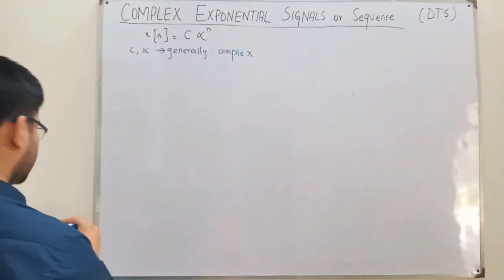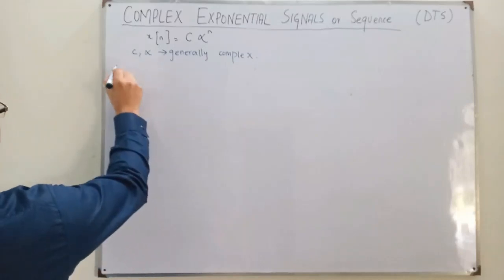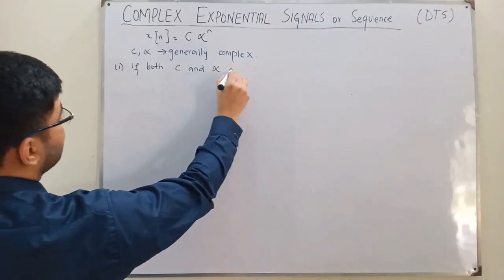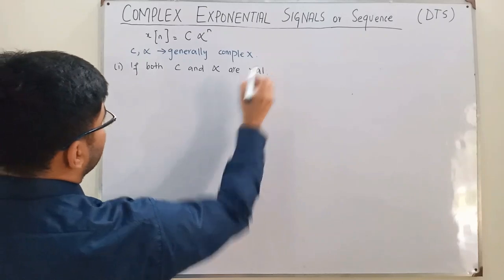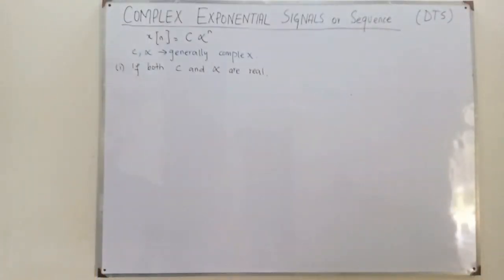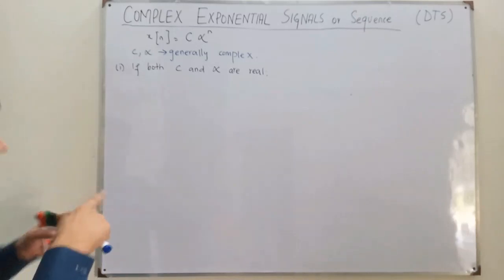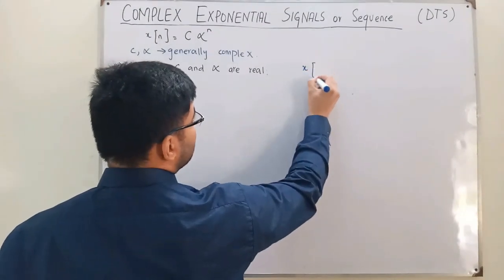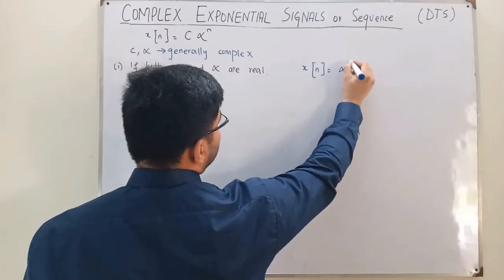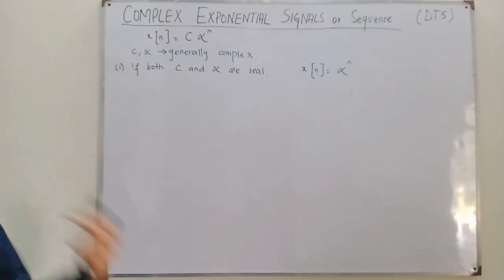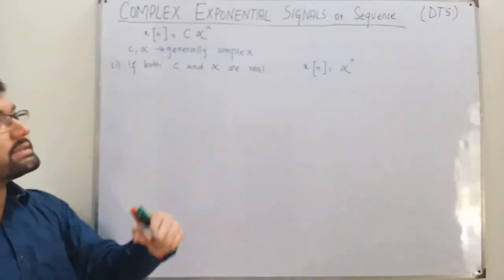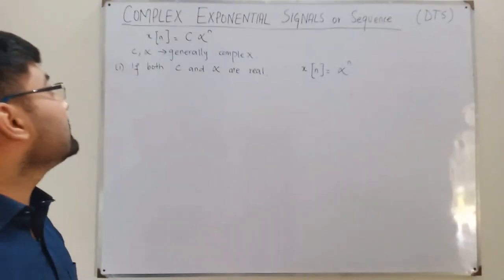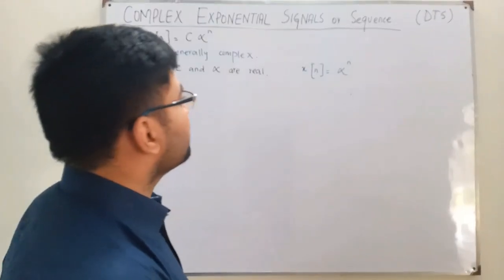Now depending on the values of C and alpha, let's take the first case: if both C and alpha are real. If we assume C equals one, then the signal simplifies to x of n equals alpha to the power n. The behavior depends entirely on alpha, since n takes finite values like 0, 1, 2, 3, 4.